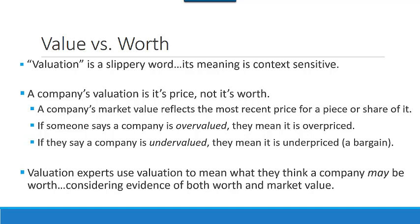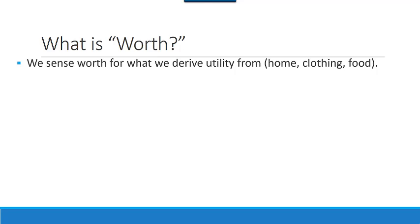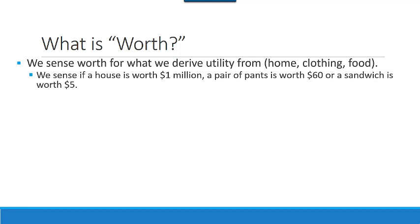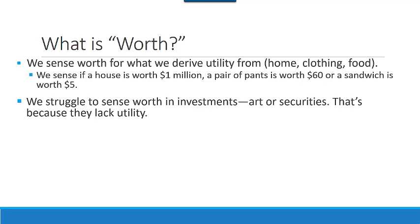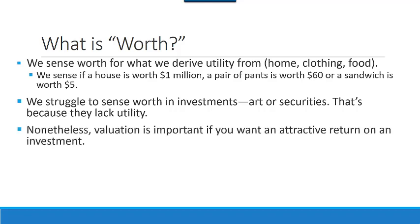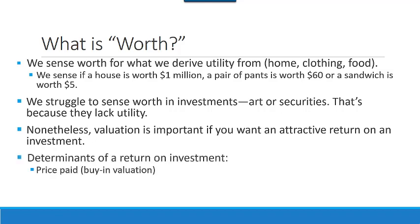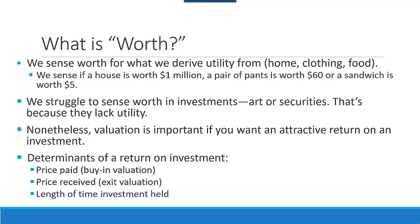As a result, there is often a difference between value, or the valuation, and what something is worth. So what is worth? We sense worth for what we derive utility from — home, clothing, food. We sense, for example, if a house is worth $1 million, a pair of pants is worth $60, or if a sandwich is worth $5. But we struggle to sense worth in investments, such as art or securities, because they lack utility.